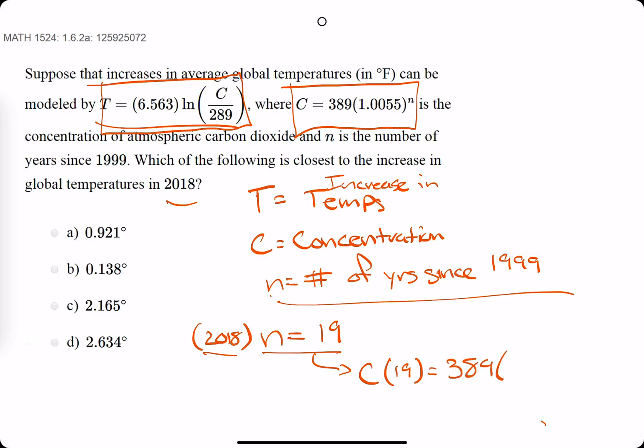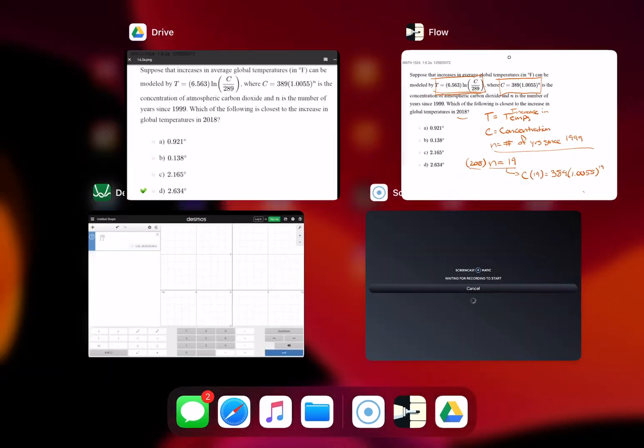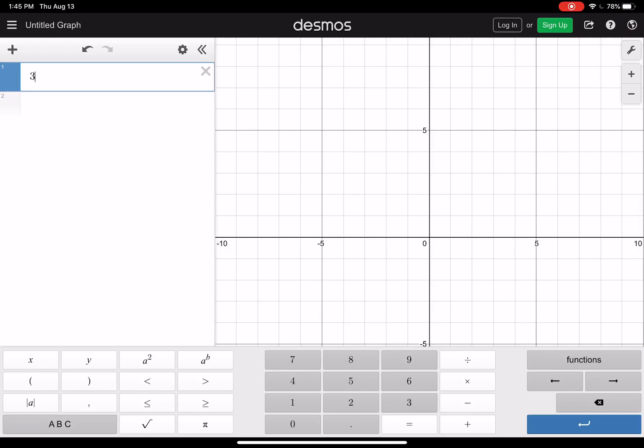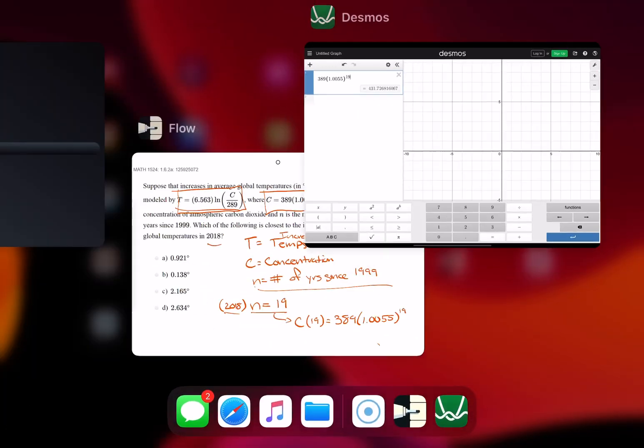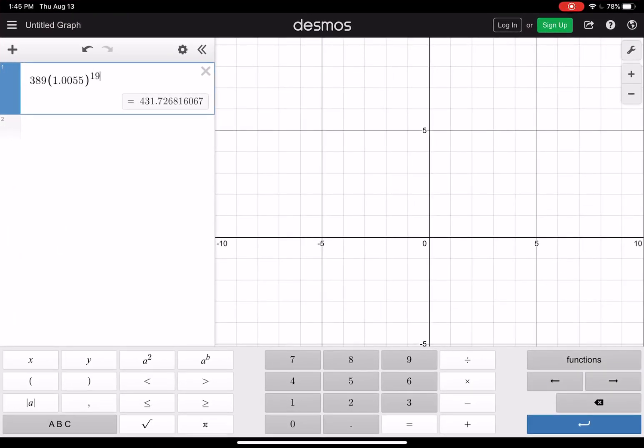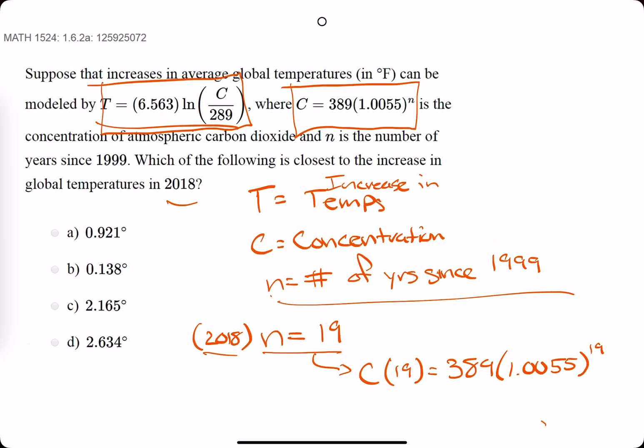So we'll say C of 19 is equal to 389 times 1.0055 raised to the N power, but N is 19 in this case. So 389, 1.0055 to the 19. See if I can remember that for Desmos here. Okie dokie, 389 times, I've already forgotten it, maybe. Let's see. I'm going to try out what I remember, see if it's right. Raised to the 19. So 389, let's see if it'll come back up. 1.005 to the 19. I think we're good.